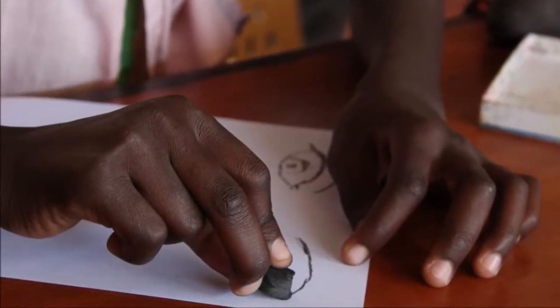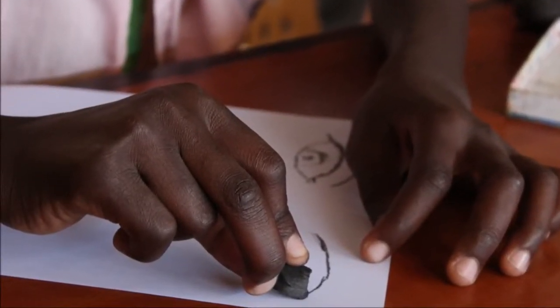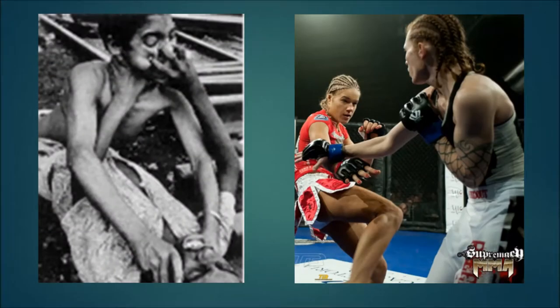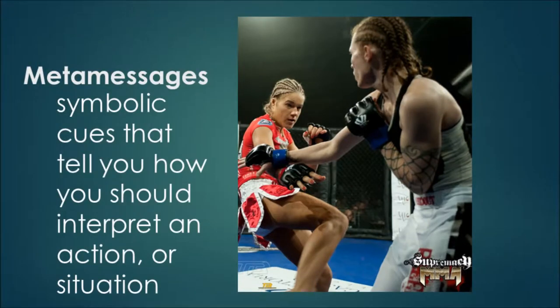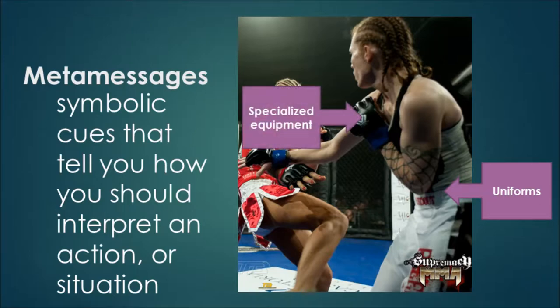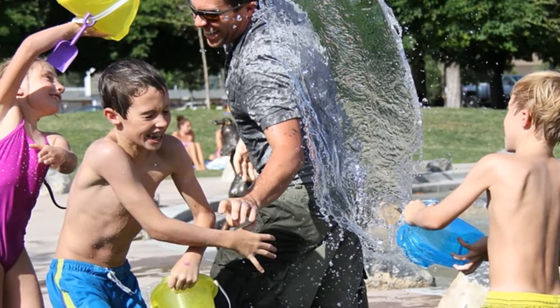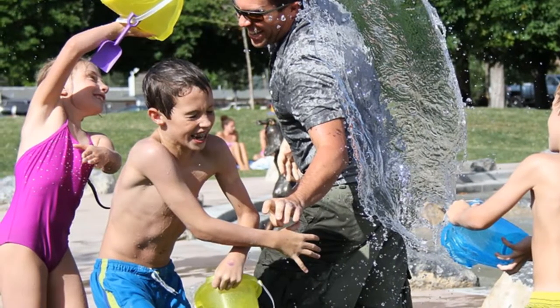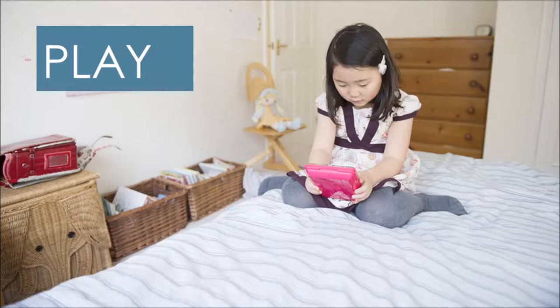Any activity can be reframed as a form of play if the right metamessages are sent. For example, what makes one fight real and the other play? The answer is metamessages — symbolic cues that tell you how you should interpret the action or situation. These metamessages can be as complex as a formal set of rules, a specified play area or specific objects, or as simple as a wink or holding back a punch so it doesn't really hurt. That said, there are a few features that are common, if not universal, in forms of play in the contemporary world.